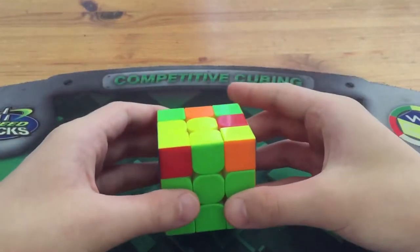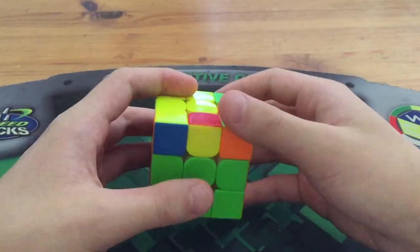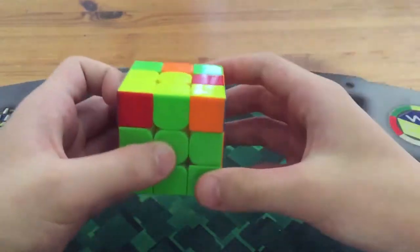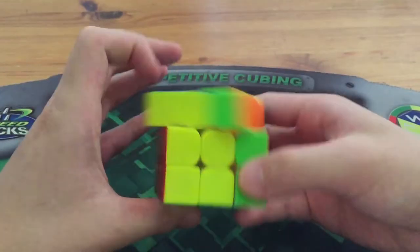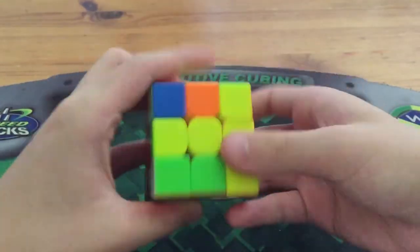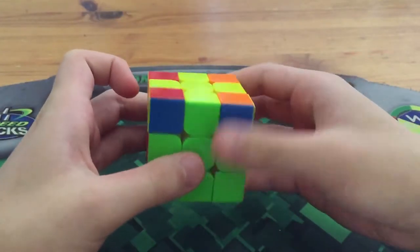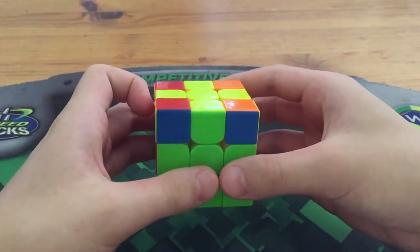When you have this case from this angle, instead of doing a U move into the standard algorithm, you could do R, U, B, U', B', R', and it's going to be better since it avoids a slight re-grip and an extra U move.